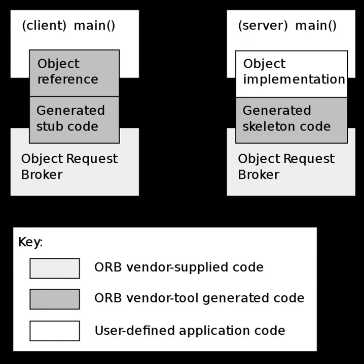The GIOP (General Inter-ORB Protocol) is an abstract protocol by which object request brokers communicate, maintained by the Object Management Group. The GIOP architecture provides several concrete protocols, including: the Internet Inter-ORB Protocol (IIOP), an implementation of GIOP for use over the Internet providing a mapping between GIOP messages and the TCP/IP layer; SSL-IOP, which is IIOP over SSL providing encryption and authentication; HTIOP, which is IIOP over HTTP providing transparent proxy bypassing; and ZIOP, a zipped version of GIOP that reduces bandwidth usage.